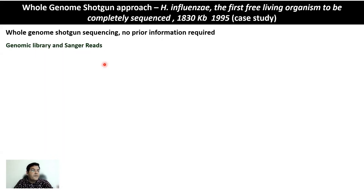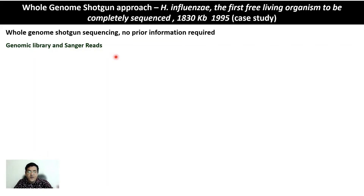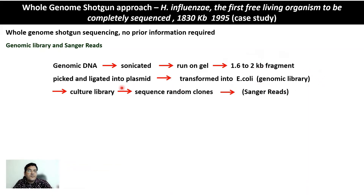The first step is to create a genomic library and generate Sanger reads. The genomic DNA was taken and sonicated, then size separation was done on gel. Fragments corresponding to 1.6 to 2 kb were selected for further analysis. These fragments were ligated into plasmids, transformed into E. coli, resulting in the formation of the genomic library. Random clones were then cultured and sequenced to generate Sanger reads using a single primer.